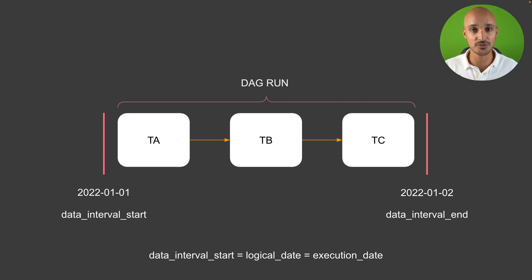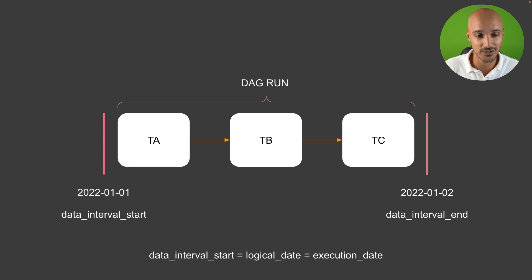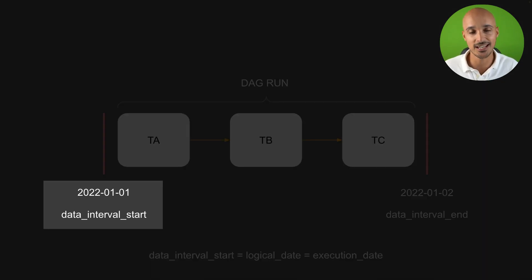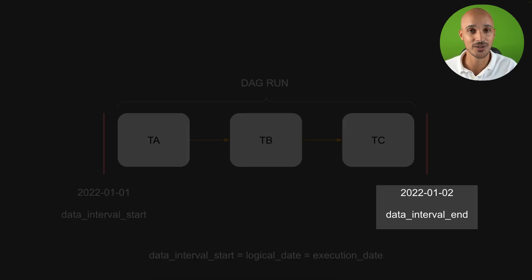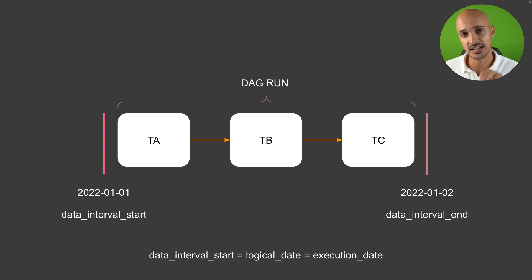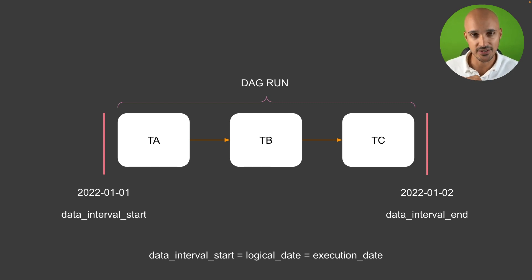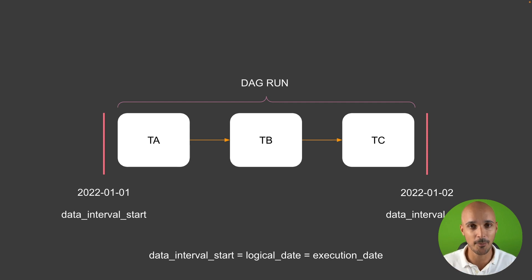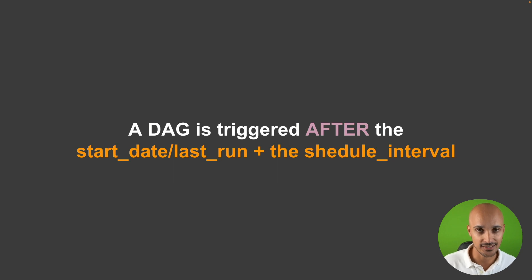So if you run your DAG for the 1st of January 2022, then the data interval start will be the 1st of January 2022 and the data interval end will be the 2nd of January 2022. Especially if you use Airflow prior to version 2.2, the data interval start equals the logical date, which is equal to the execution date. Keep this in mind: the scheduler runs a DAG after the start date, or the last time that your DAG was triggered, plus the schedule interval.